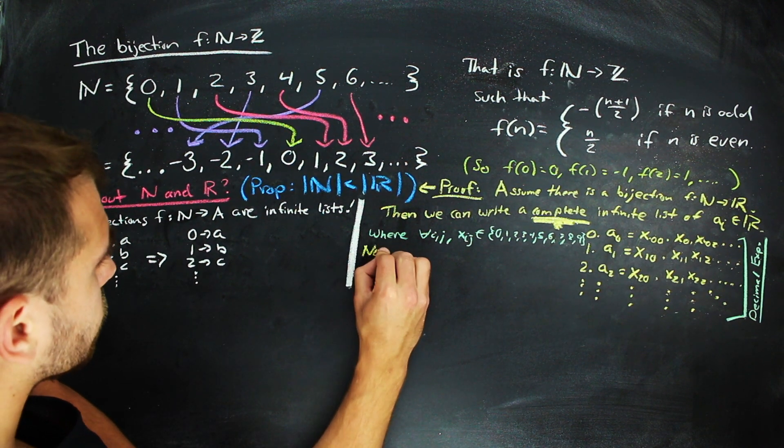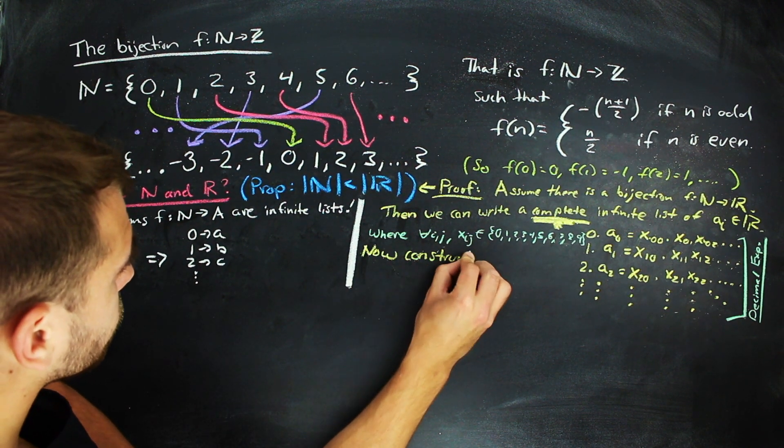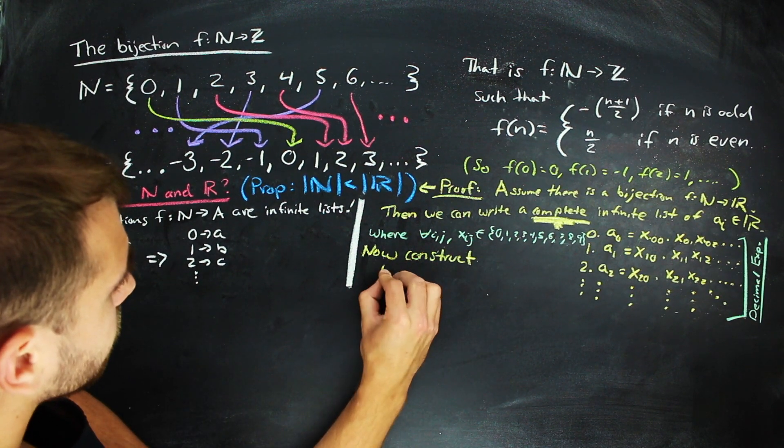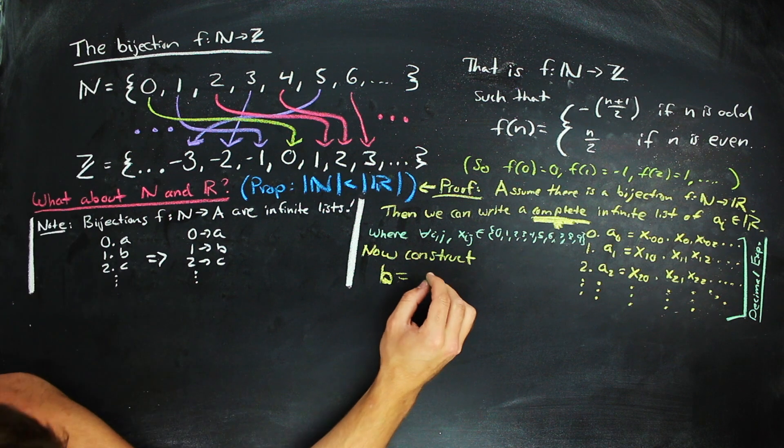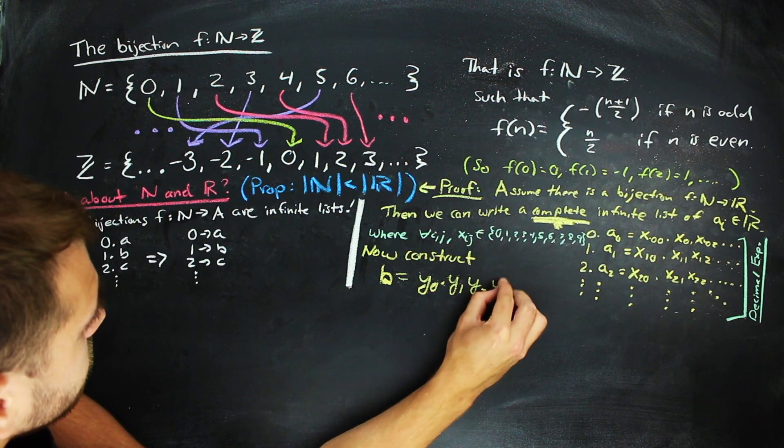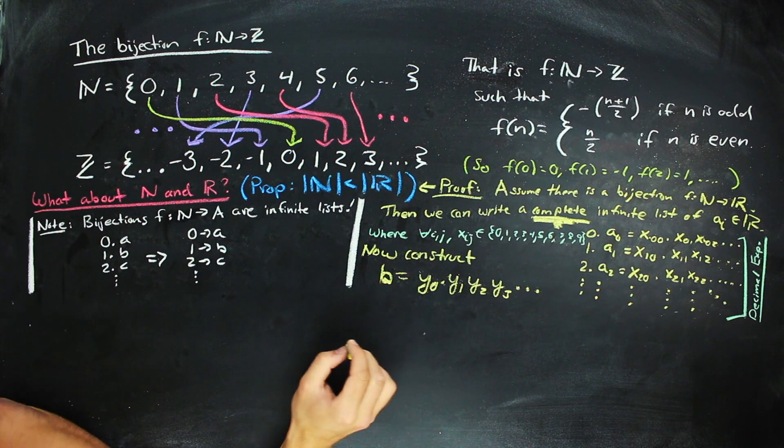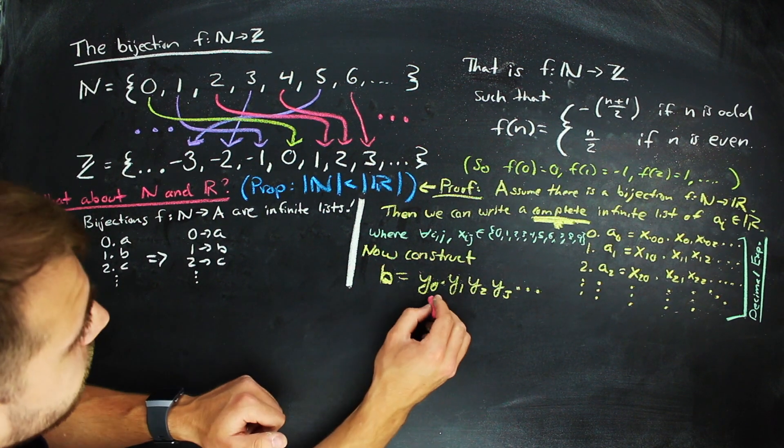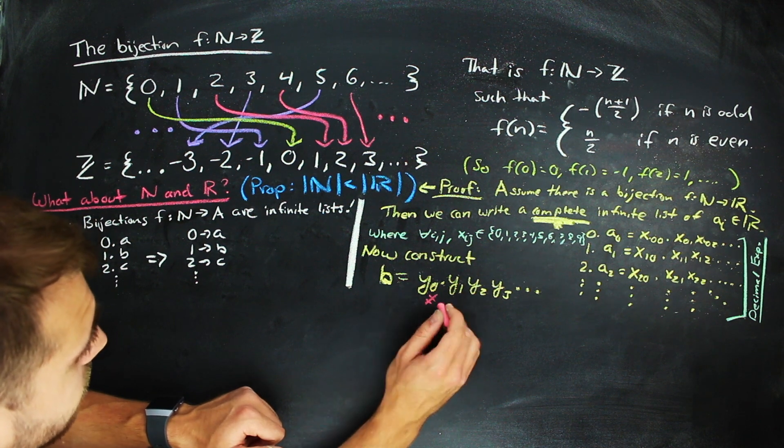Alrighty, so we're going to go ahead and look at the diagonal digits in our list. So that is like x00, x11, x22, x33, and so forth. And we're going to go ahead and create a number b such that the first digit of b is not the first digit of the first number in our list. That is, the first digit of b does not equal x sub 00.